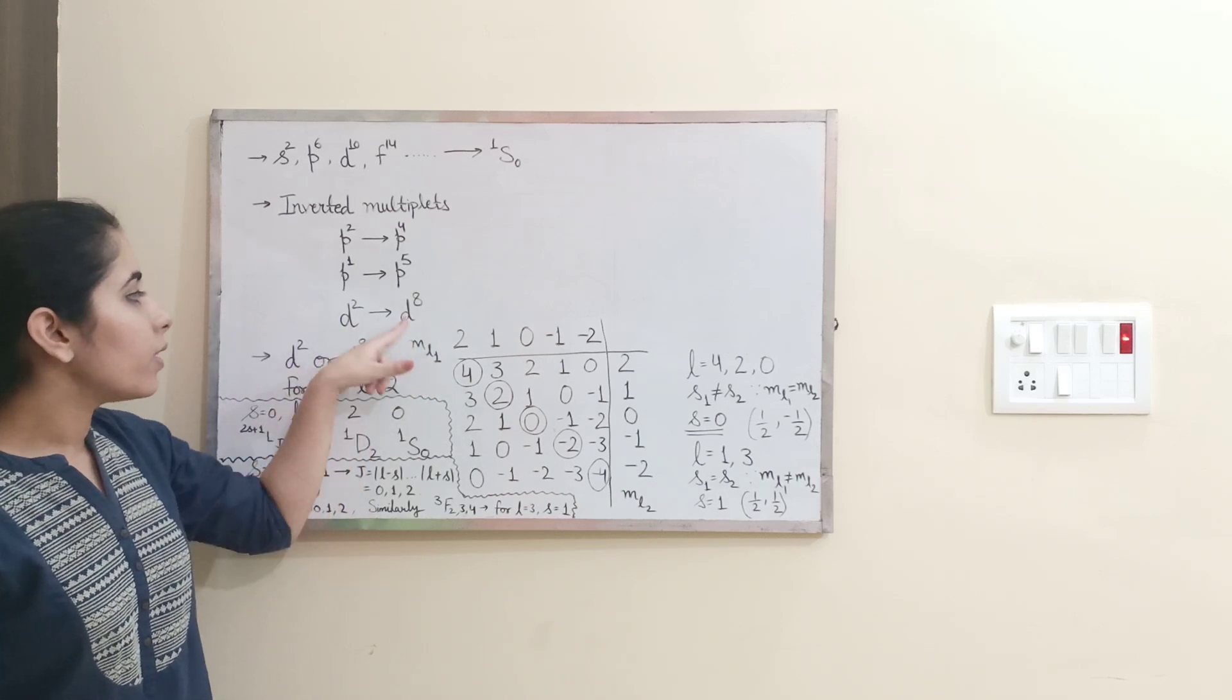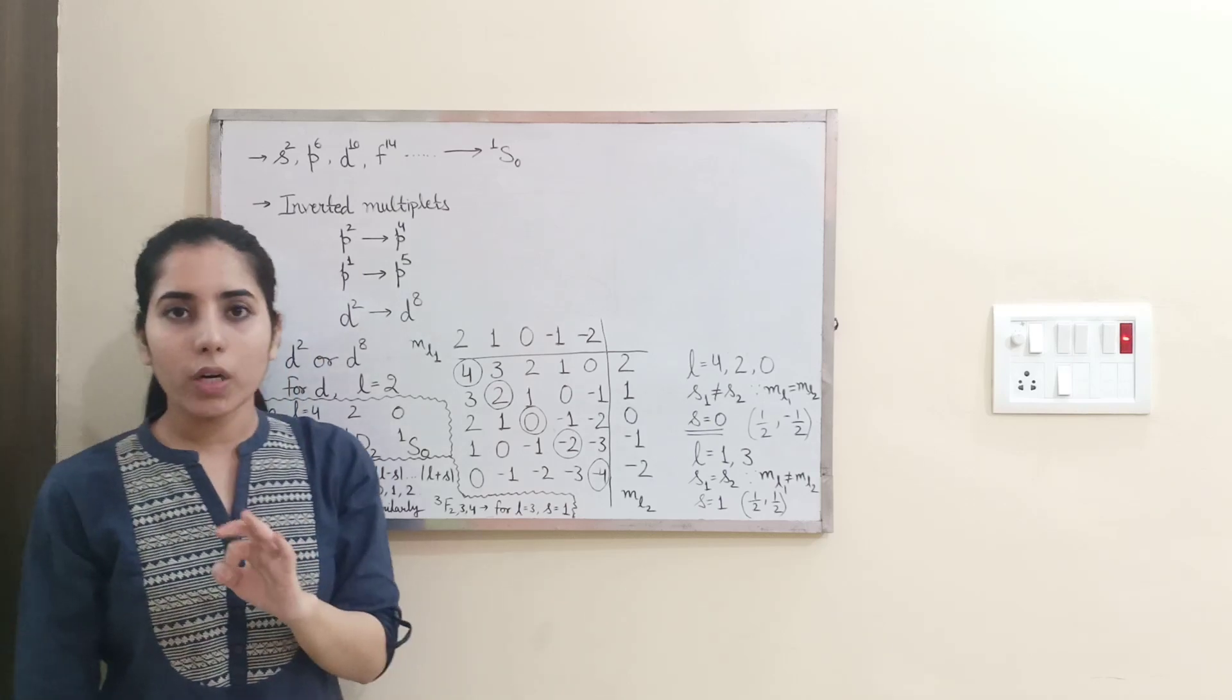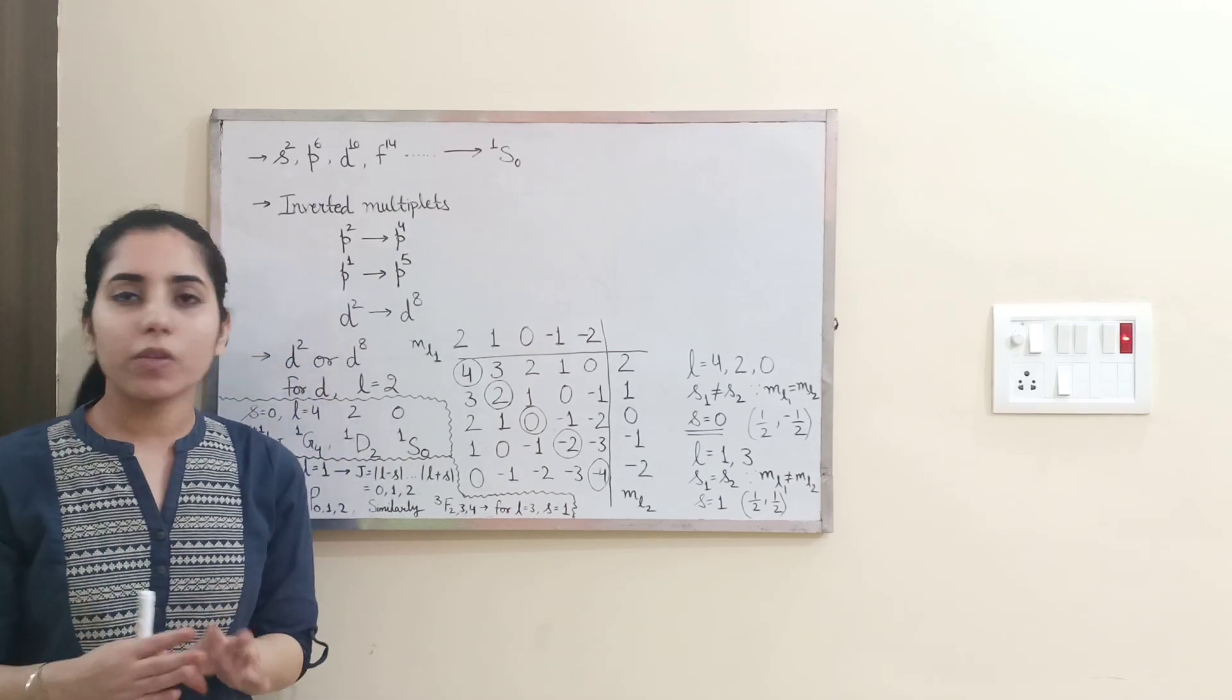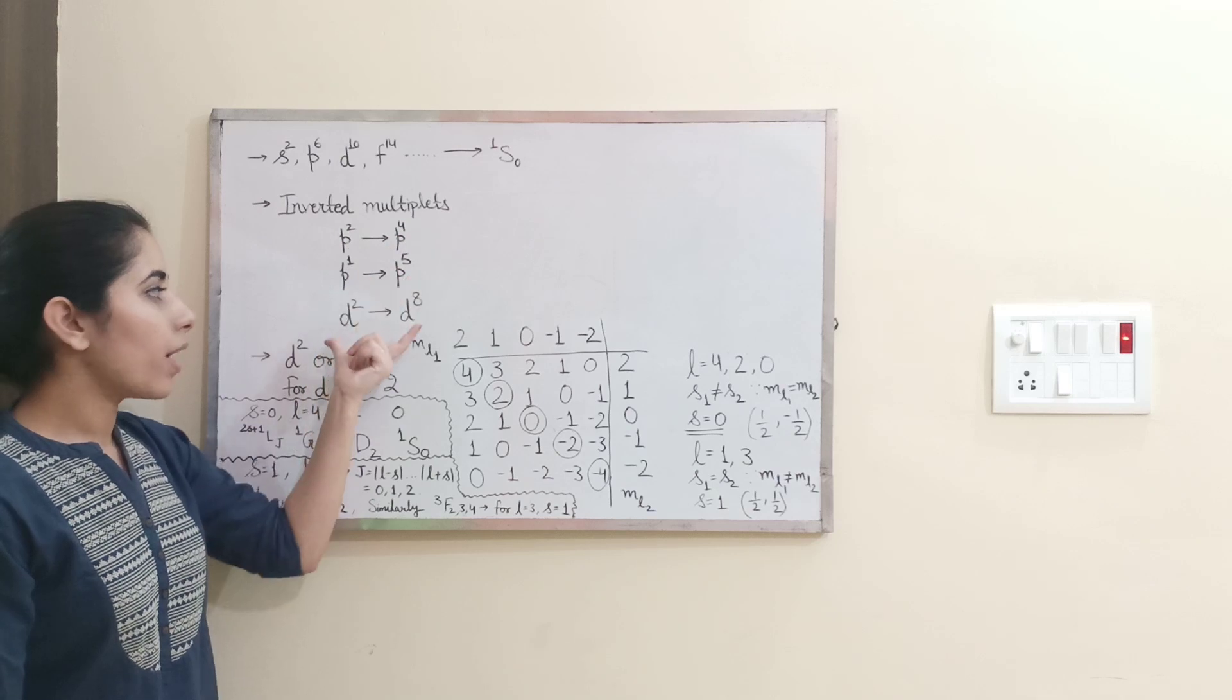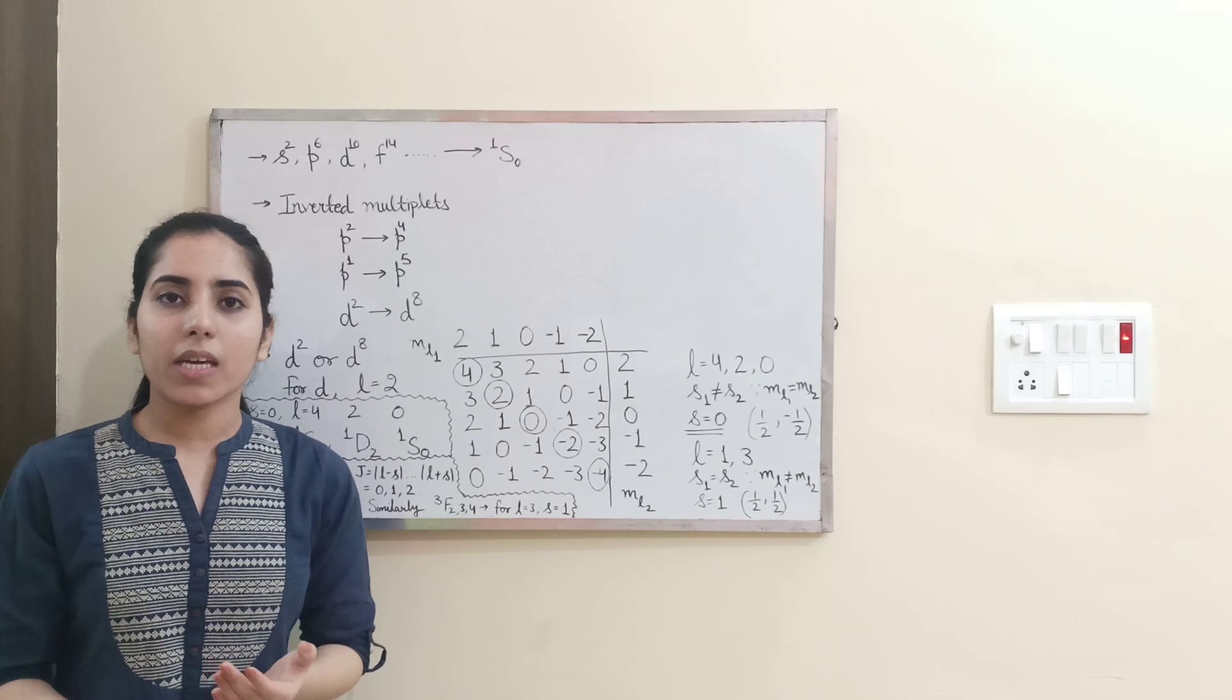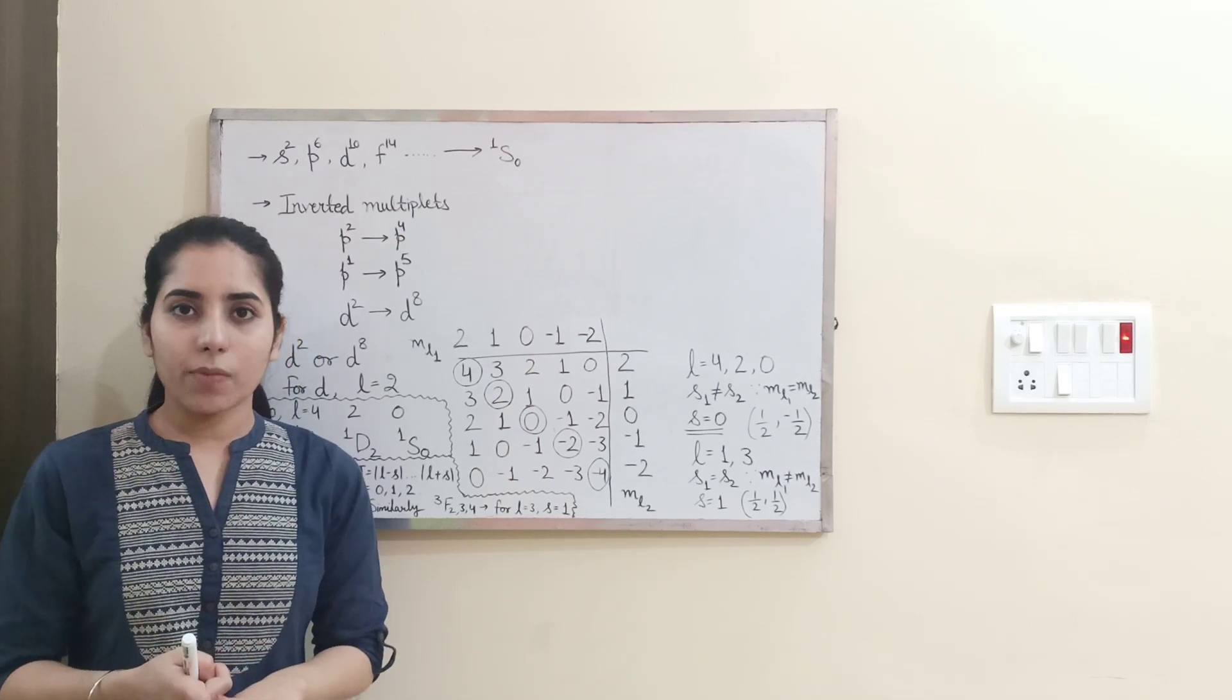So for this and this, D2 and D8, for P1 and P5, for P2 and P4, spectroscopic term notations will be same. Like whatever spectroscopic terms you are going to get, that will be same for first two, for next two and for last two. Clear? Similarly, for all other cases, whenever you are taking the case of inverted multiplet, spectroscopic term will be same for them.